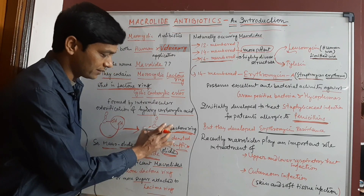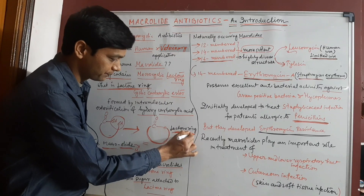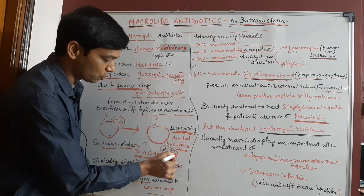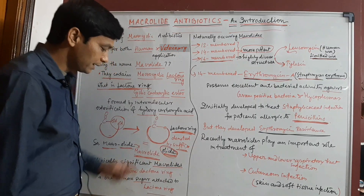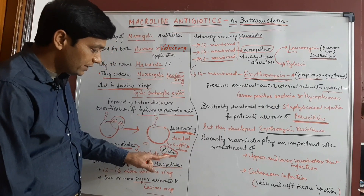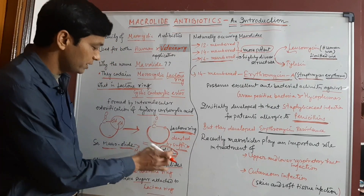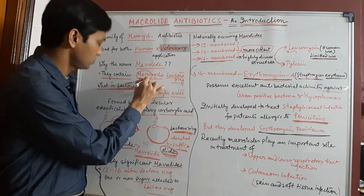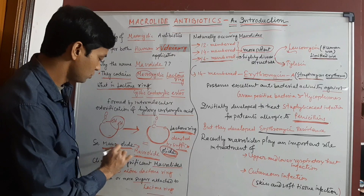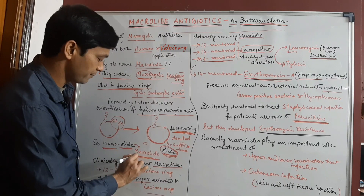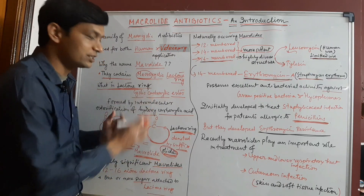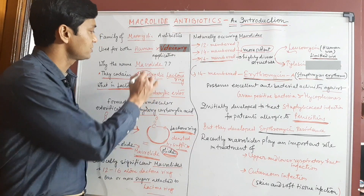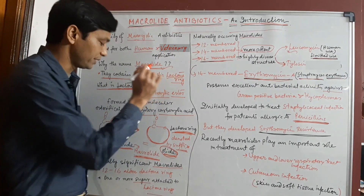This cyclic ester is named the lactone ring and is denoted by the suffix '-olide'. When '-olide' is attached to 'macro', we get macro + olide = macrolide, and this is why this type of antibiotic is named a macrolide antibiotic.